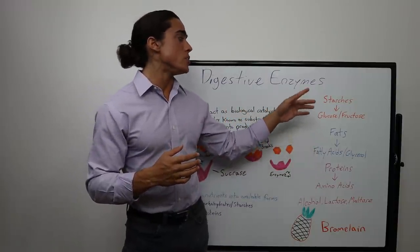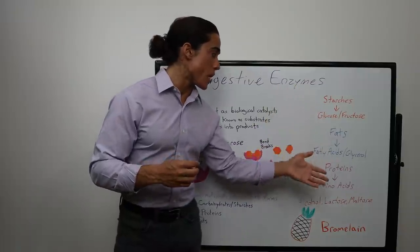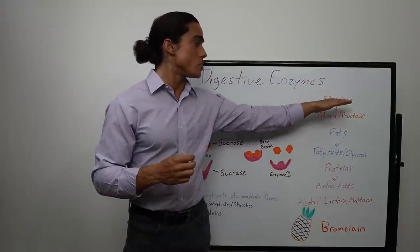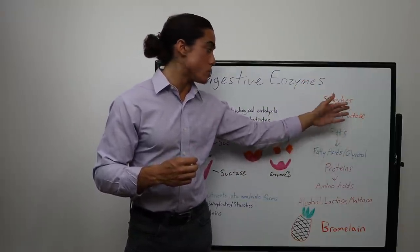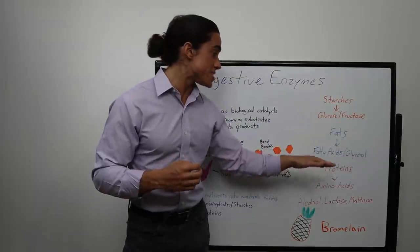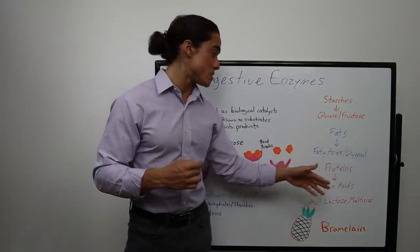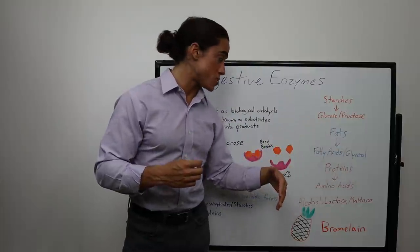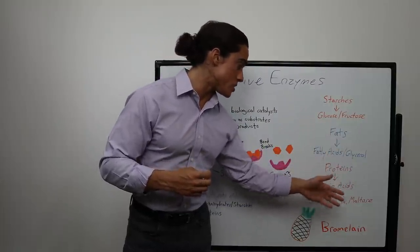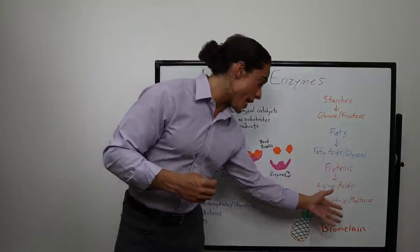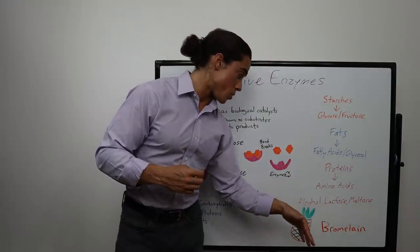When you consume carbohydrates — starches, pasta, bread — your body needs to convert them into glucose and fructose in order to be absorbed. When you consume fats, they need to be converted into fatty acids and glycerol to be absorbed by the small intestine. And when you consume proteins, they need to be converted into amino acids to be absorbed by the small intestine.